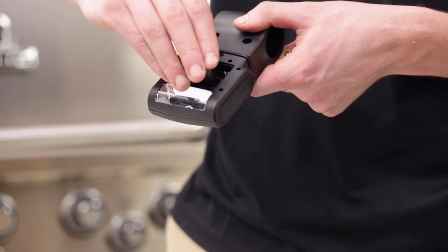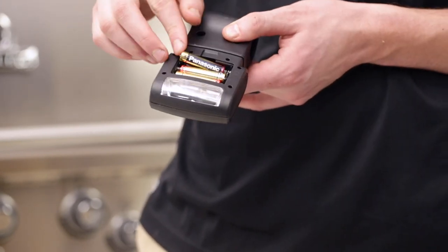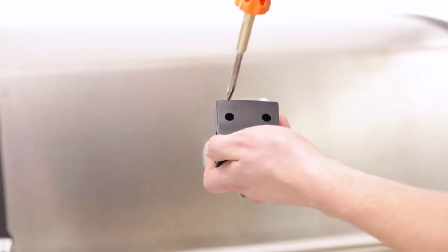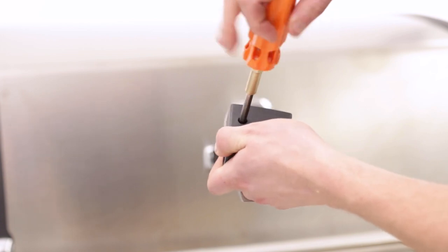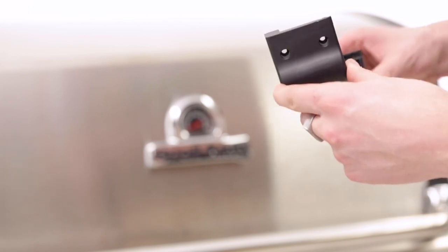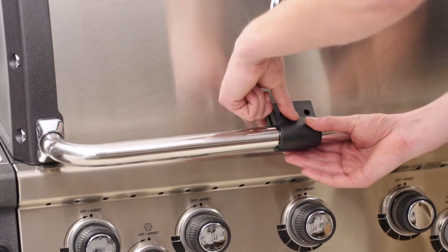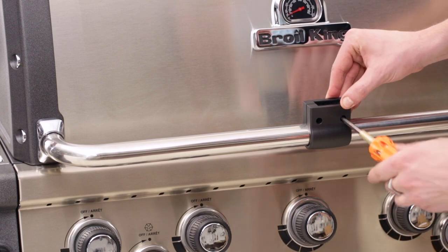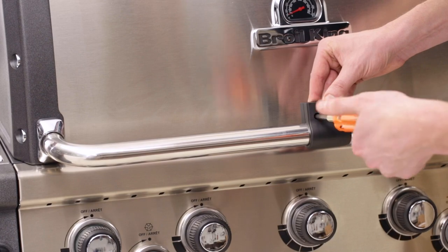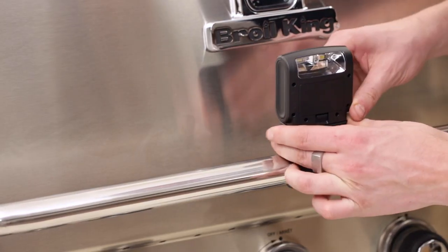To attach the handle-mounted grill light, remove the battery cover and insert three batteries. Replace the battery cover and separate the light head from the mounting bracket. Remove the two screws from the mounting bracket and pull the bracket apart. Clip the bracket around the grill handle and replace the two screws. Slide the light head back onto the bracket and adjust to desired position.